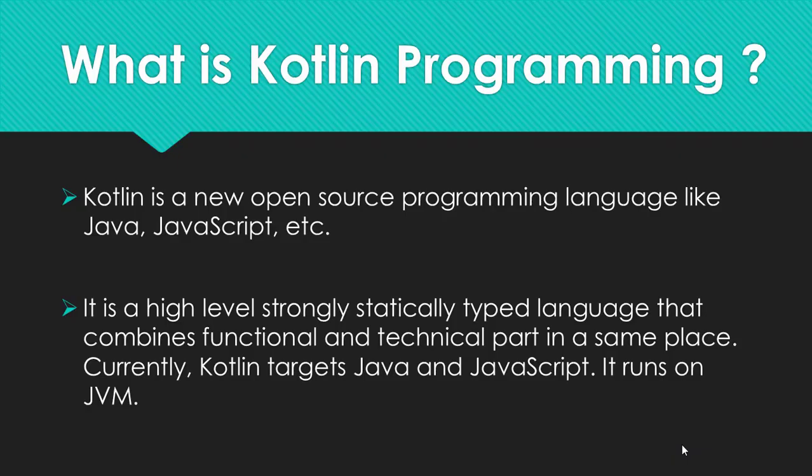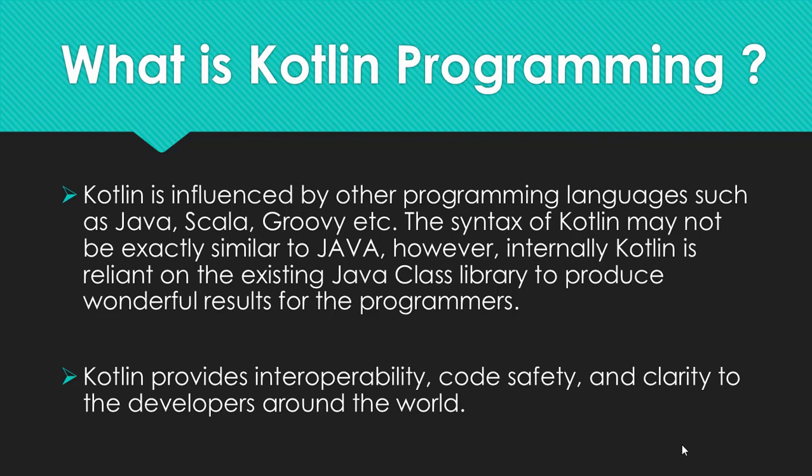The first question is: what is Kotlin programming? Kotlin is a new open source programming language like Java and JavaScript. It's a high level, strongly statically typed language that combines functional and technical parts in the same place. Kotlin targets Java and JavaScript and it runs on JVM.